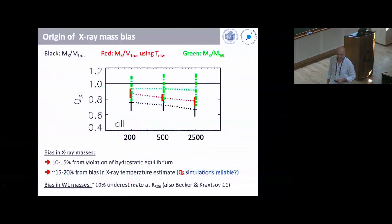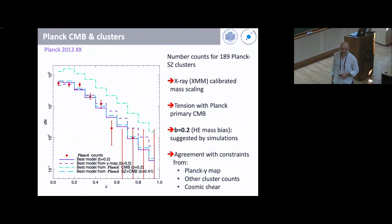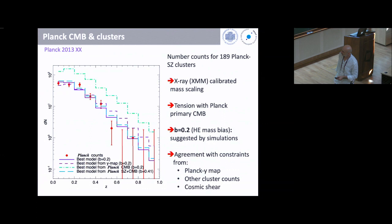The green line shows the ratio of X-ray mass to weak lensing mass; the fact that the black line is below the green line means weak lensing masses are closer to the true mass but still not there — roughly 10 percent below. This brings us back to the famous tension between the cluster number counts predicted by the Planck CMB cosmology and what was observed by Planck through the Sunyaev-Zel'dovich effect, where a 40 percent mass bias was argued to be needed to reconcile the two.